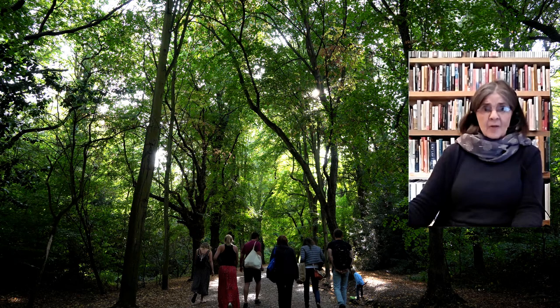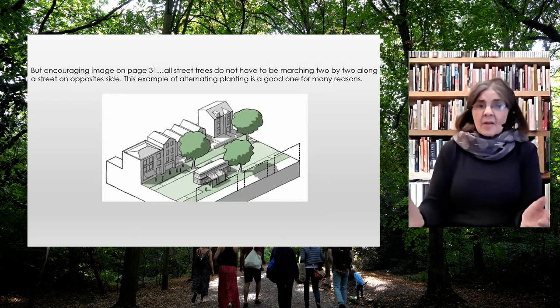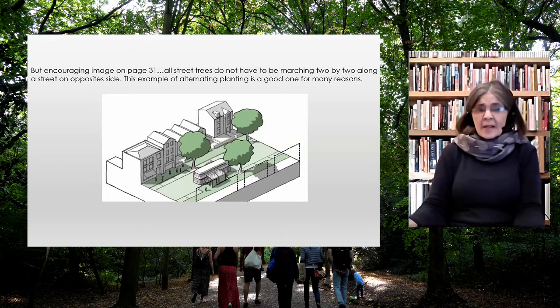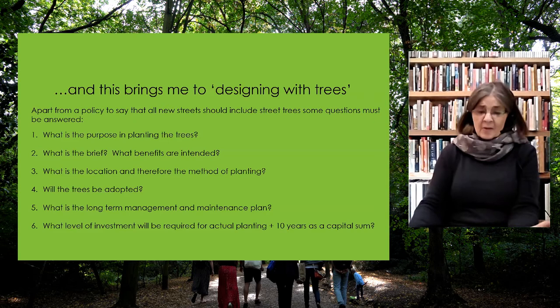On page 31 there are encouraging images. When people talk about street trees, let's get out of our minds the idea that you have to have serried ranks of pairs of trees marching along the street. There are many ways to integrate trees into streets without simply lining them — you can do alternate planting, highlight crossing places, make landmark links.